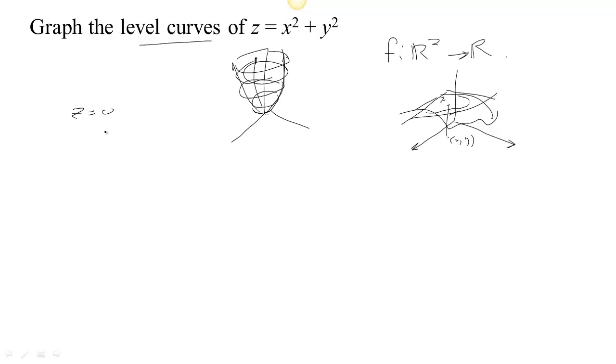So if z equals zero, then we have zero equals x squared plus y squared. That is a single point, right? The only way that x squared plus y squared would be zero would be if both of these numbers were zero. So there's the z equals zero level set.